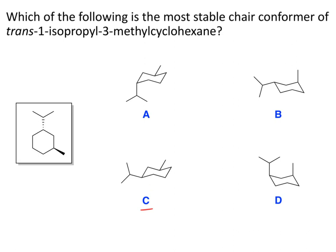The problem with C is that it doesn't match the structure on the left — it's a different isomer. The structure on the left has the methyl and the isopropyl group trans; they're on opposite sides. In C, the methyl is up and the isopropyl is up — this is cis. So the problem is it doesn't match the molecule in the box. We need those groups to be trans, which also eliminates D because those are also cis.